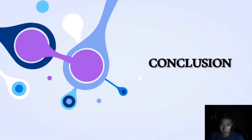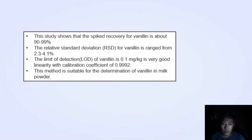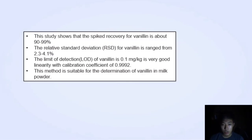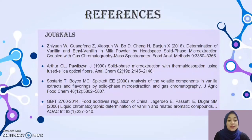My name is Muhammad Alif and I want to present the conclusion. The study showed that the spike recovery of vanillin is about 90 to 99%. The relative standard deviation (RSD) for vanillin ranged from 2.3 to 4.1%. The limit of detection (LOD) of vanillin is 0.1 mg/kg, with a very good linearity with a correlation coefficient of 0.9992. This method is suitable for the determination of vanillin in milk powder. These are the reference lists, which include the journals used as our research and citations. Thank you.